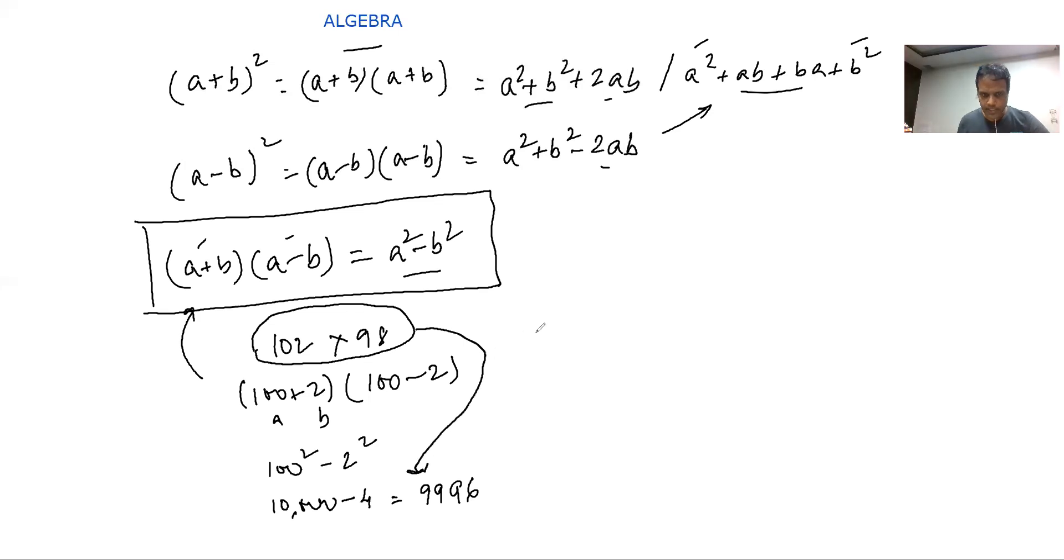Can we do a few more? Yes, say 110 × 90. Similar: 100+10, 100-10. 100² - 10². Please do not forget this. What is 100²? 10,000. What is 10²? 100. What is the answer? 9990. Sorry, it is 9900, right? 9900 is the answer.